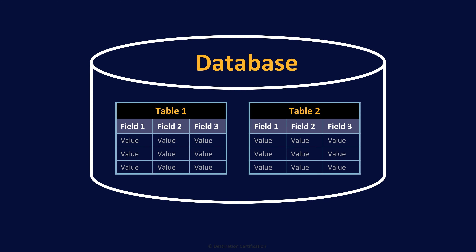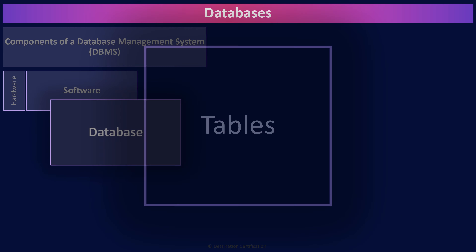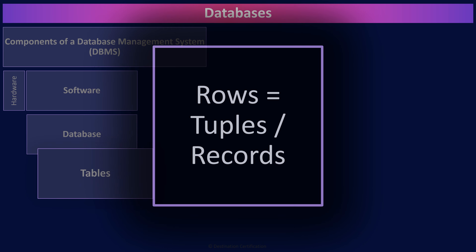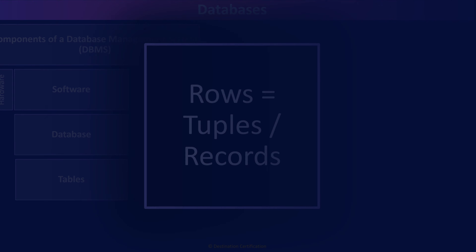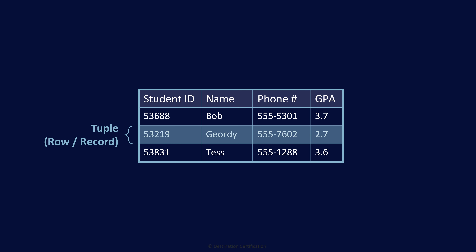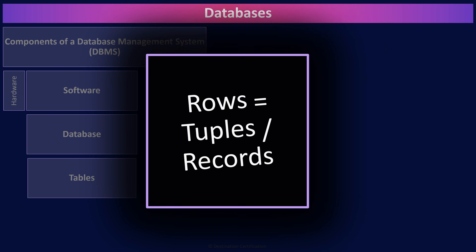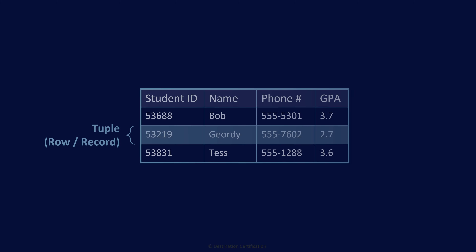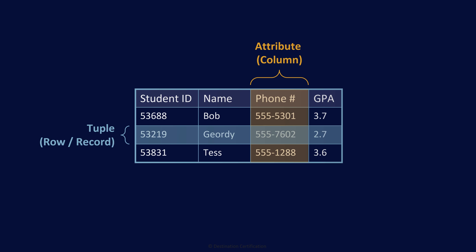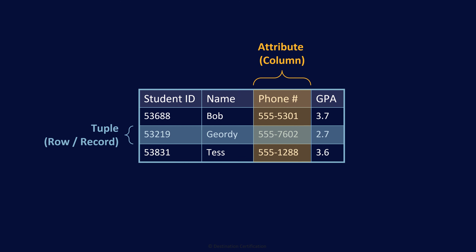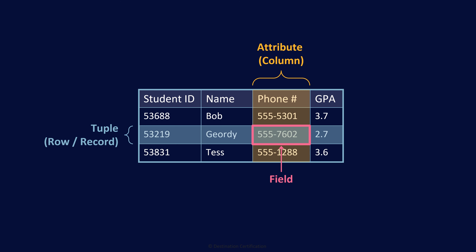A database can contain one or more tables. These tables contain rows and columns of data. If you want to roll with the cool database kids, you can refer to rows as tuples or records — though I think I've demonstrated how uncool I am by uttering that sentence. Columns can also be referred to as attributes. The intersection of a tuple and an attribute is a field — a cell of data in the table.